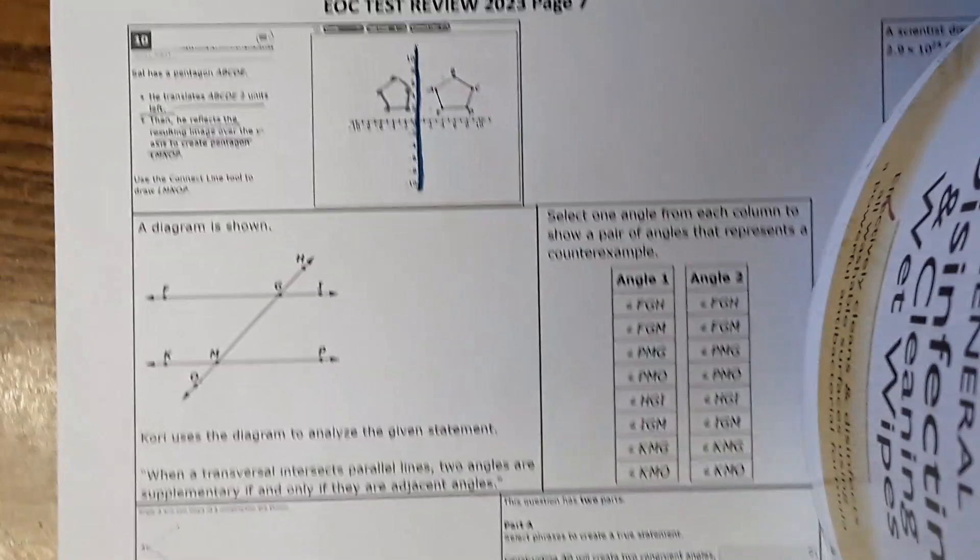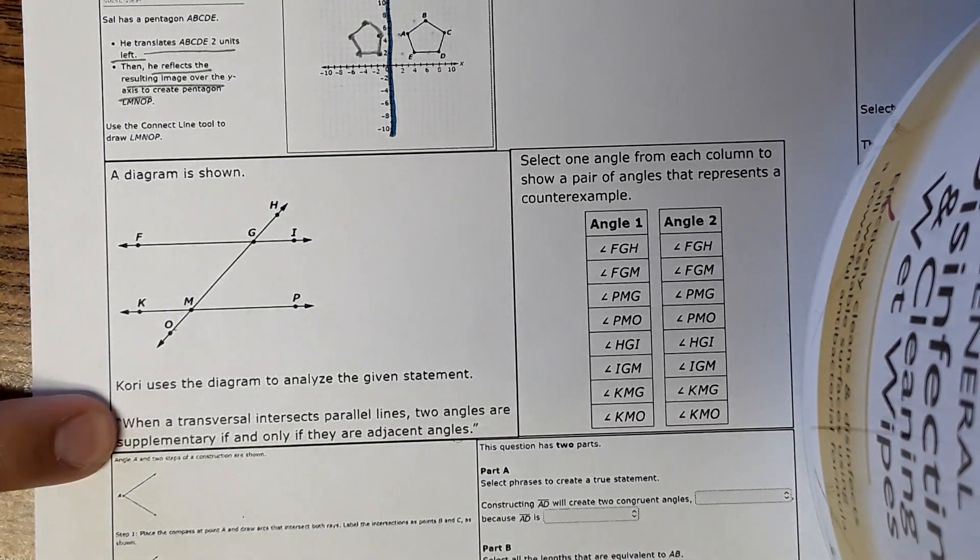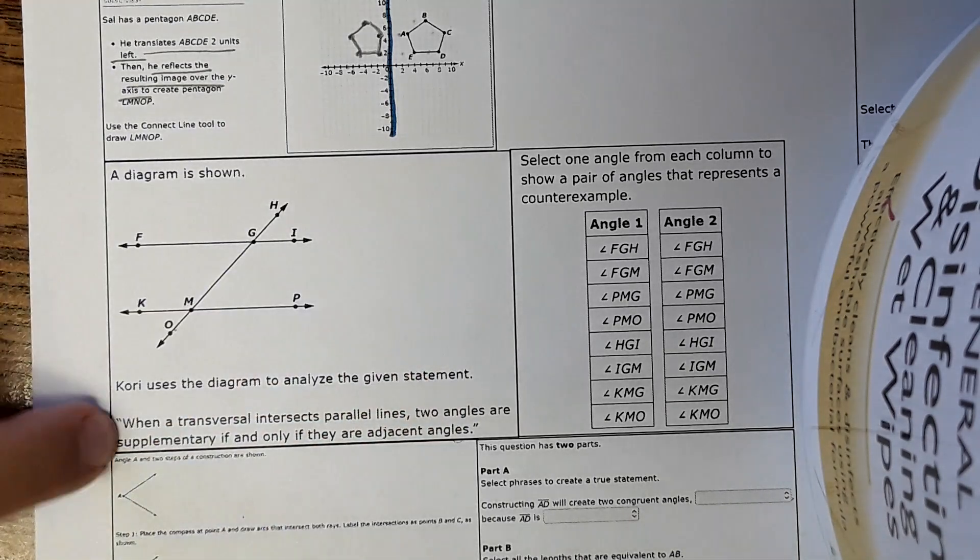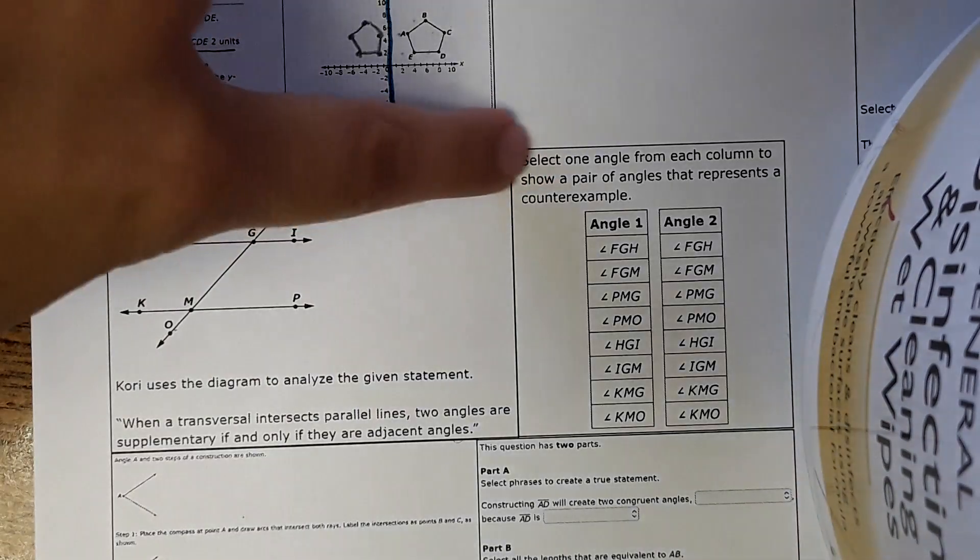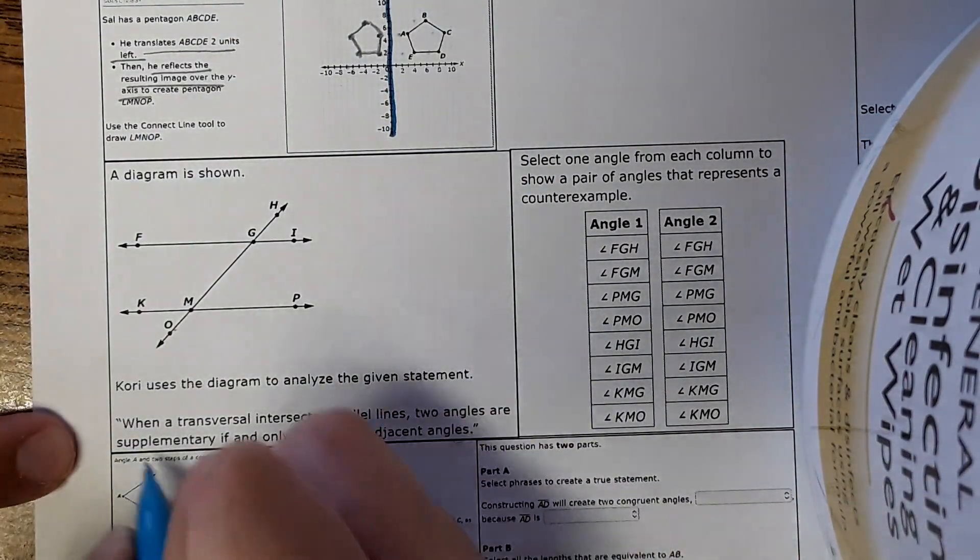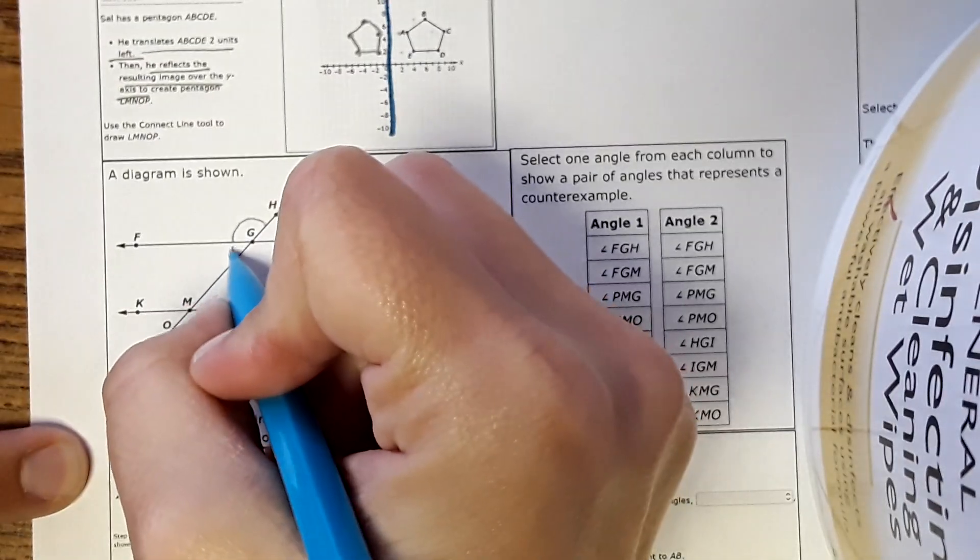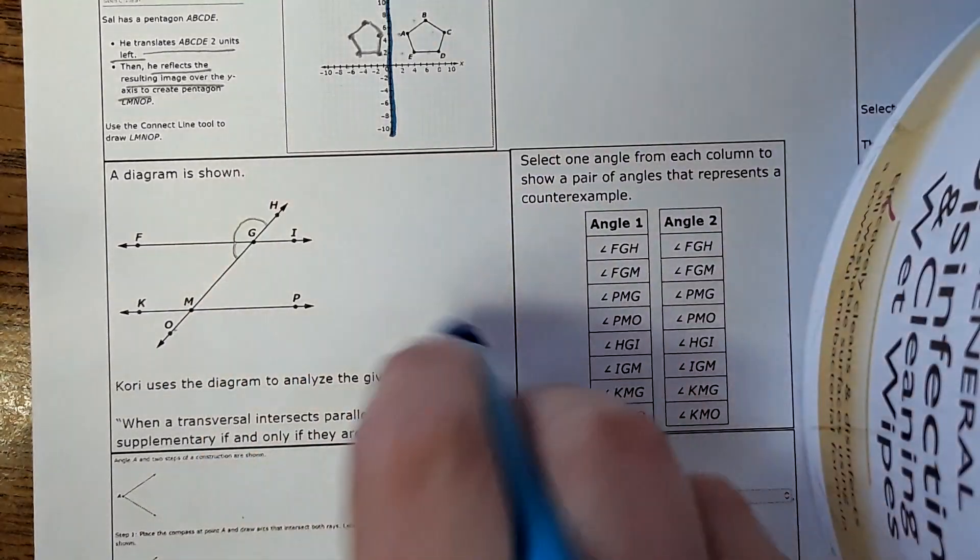Next one, it says a diagram is shown, here's a statement: when a transversal intersects parallel lines, two angles are supplementary if and only if they are adjacent angles. It wants a counter example to prove that this is not the case. So it says that two angles are supplementary if and only if they are adjacent. So adjacent angles are supplementary, but there's other situations where you have supplementary angles.